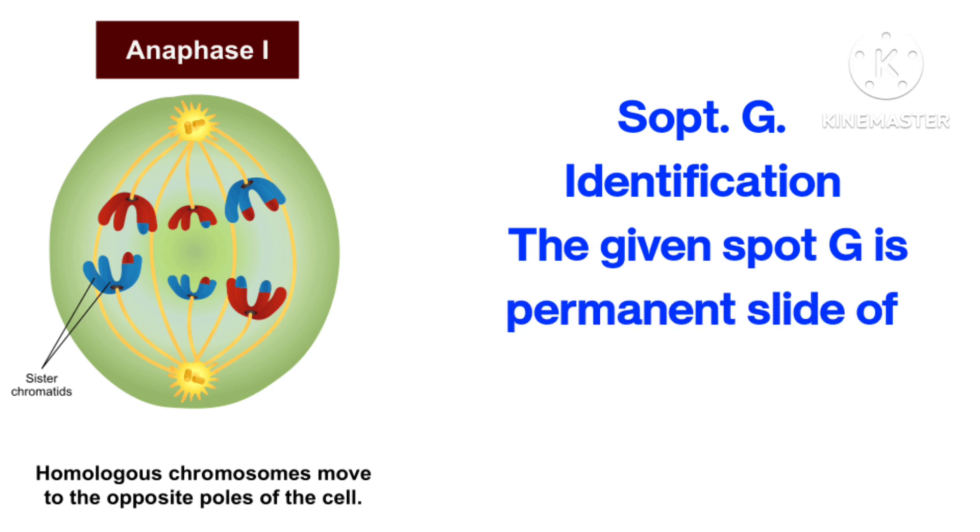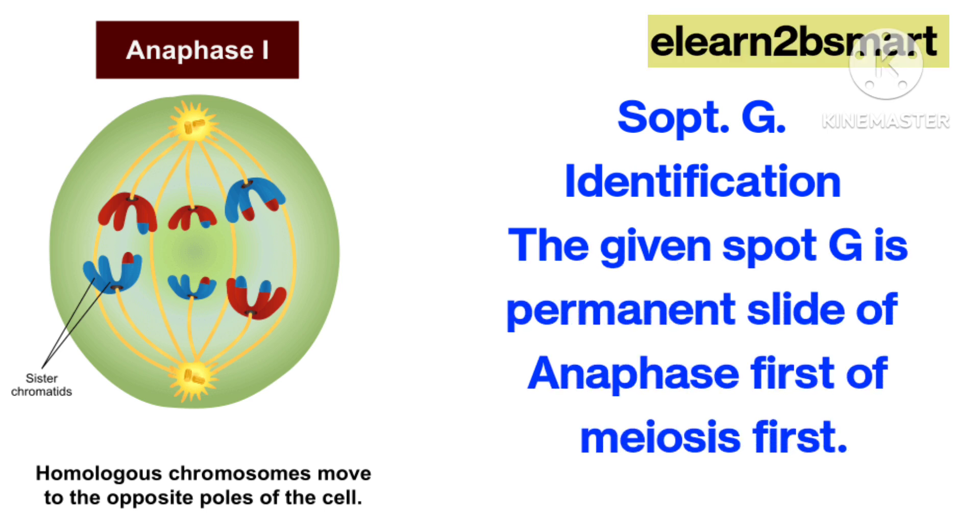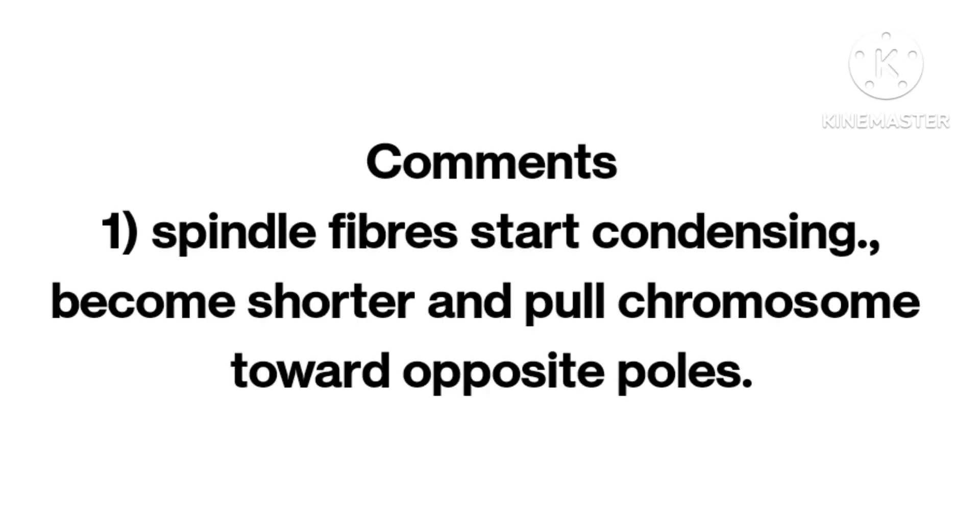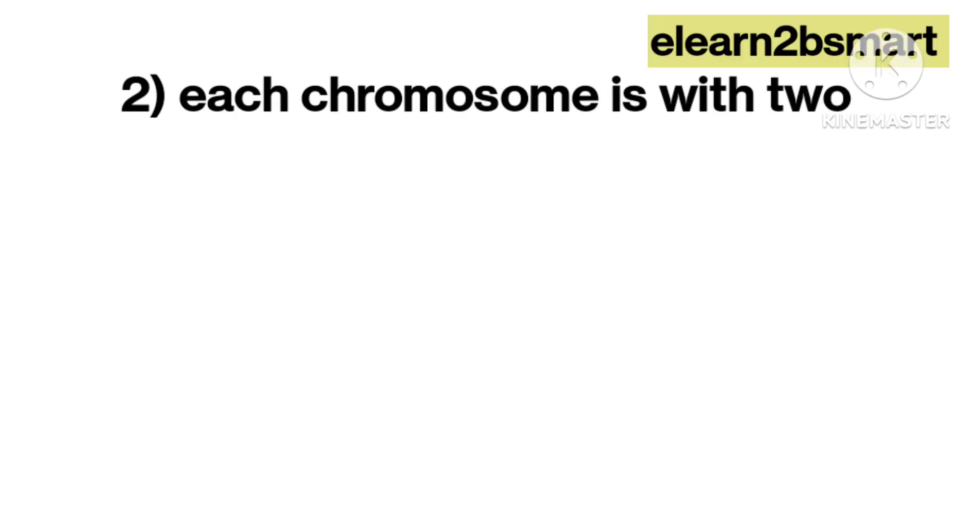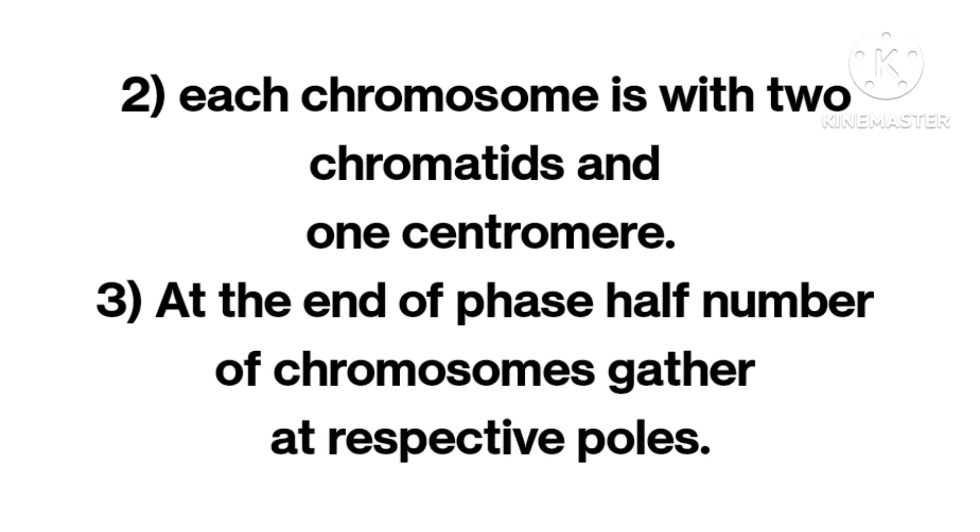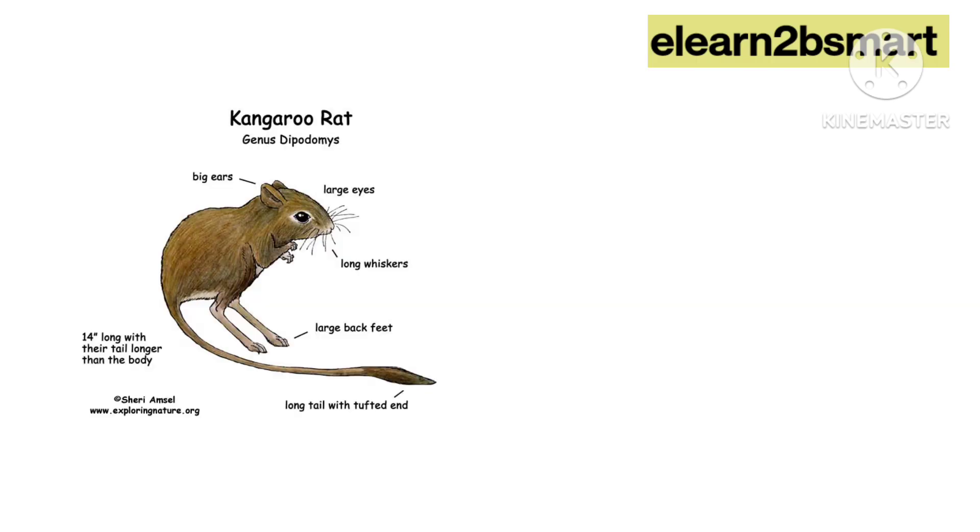Spot G. Identification: The given spot G is permanent slide of anaphase I of meiosis I. Comments: Spindle fibers start condensing, become shorter, and pull chromosomes toward opposite poles. Each chromosome is with two chromatids and one centromere. At the end of phase, half number of chromosomes gather at respective poles.